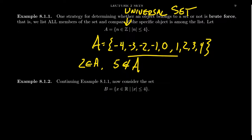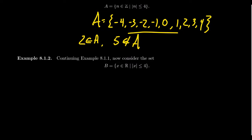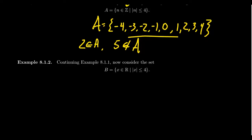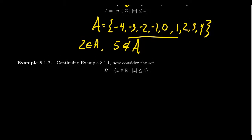Let's dig into the idea of a universal set a little bit more. What if we change the universal set? Let's take the exact same property from set A — all numbers whose absolute value is less than or equal to four — but now change the universal set to the real numbers. So set B is the set of all real numbers whose absolute value is less than or equal to four.